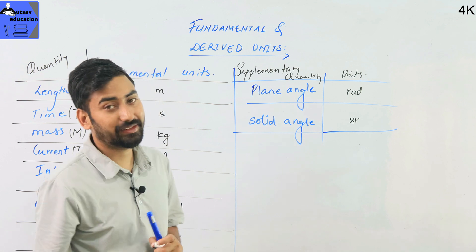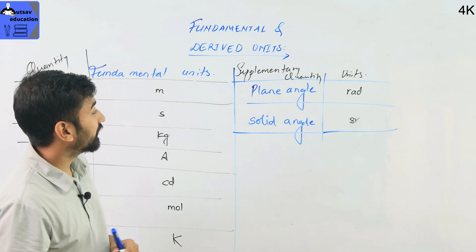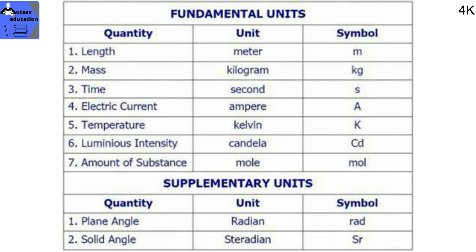Here is the symbol we are going to show. SR is the steradian. This is the supplementary quantity. The fundamental quantity and the supplementary quantity have their respective units. The supplementary plane angle is radian and the solid angle is steradian — these are the respective units.